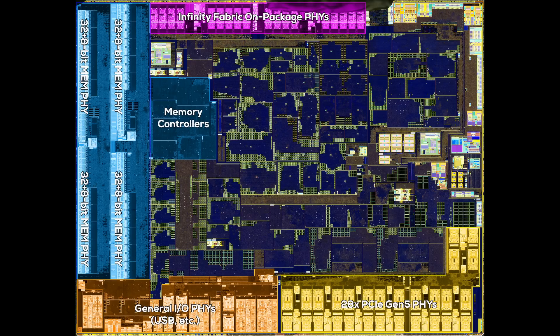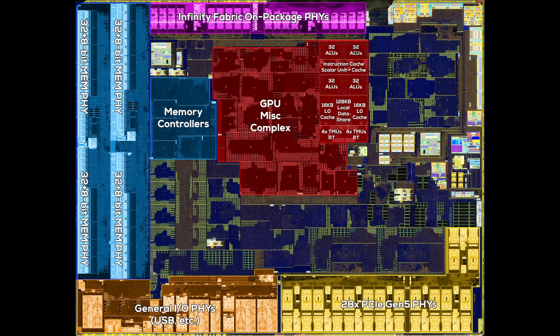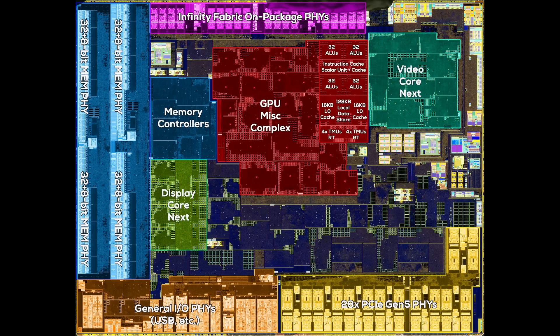In theory, each CCD should contain similar structures — let's keep that in mind for later. The large cluster in the center of the IO die is the RDNA2-based iGPU, which was introduced with Zen 4. It contains two compute units, which is the lowest possible number, because the RDNA2 architecture is based on so-called workgroup processors or WGPs, and a single WGP contains two compute units. It's a full RDNA2 workgroup with 128 ALUs and ray tracing support. As usual, the GPU misc complex is a lot bigger than the compute units themselves. Aside from the GPU, we can locate two more clusters: the display engine, right next to the memory interface, and the video decode and encoder to the right of the GPU.